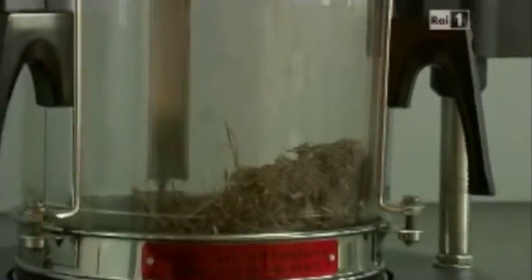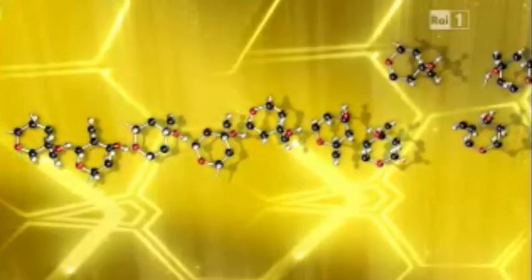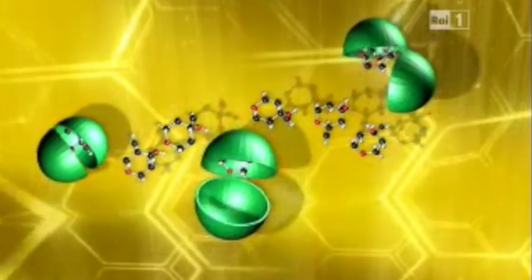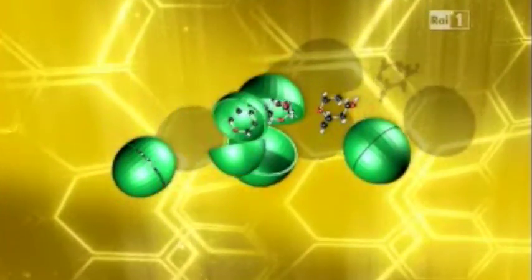First, to free the cellulose from its lignin matrix, and second, to cut the long molecule into fragments that can be fermented into alcohol.